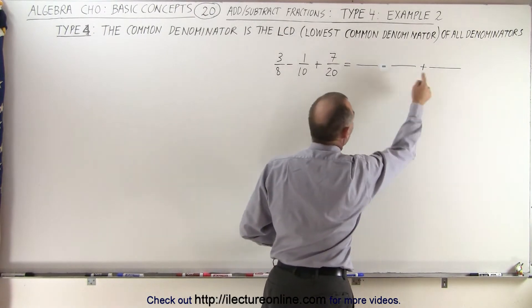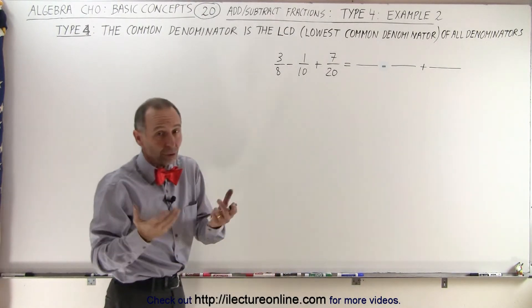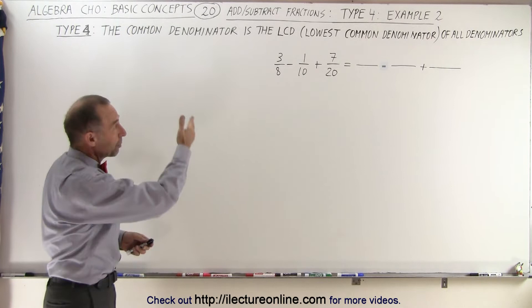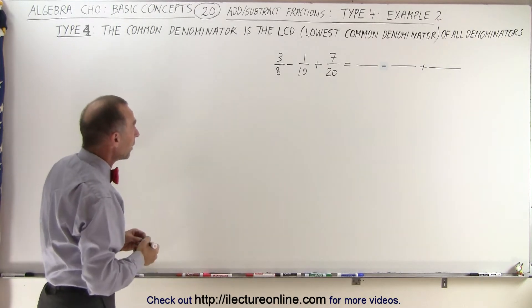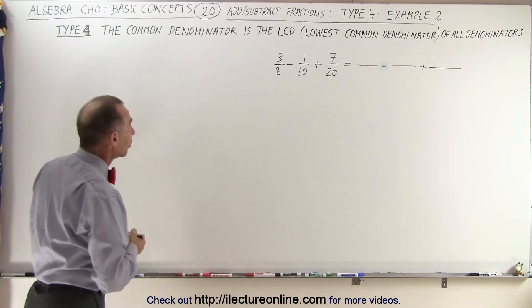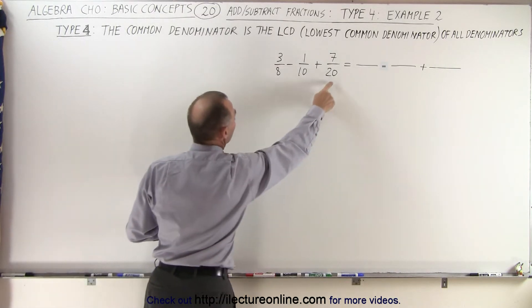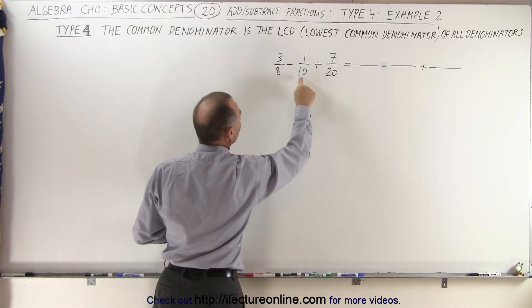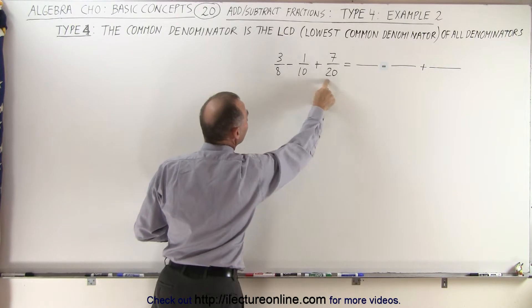Again, we must find the lowest common denominator. The denominator, the smallest denominator, which is common to all the three denominators. Again, we'll show you both methods. The first method is to find multiples of the largest denominator and then see if the smallest denominators fit evenly into that.